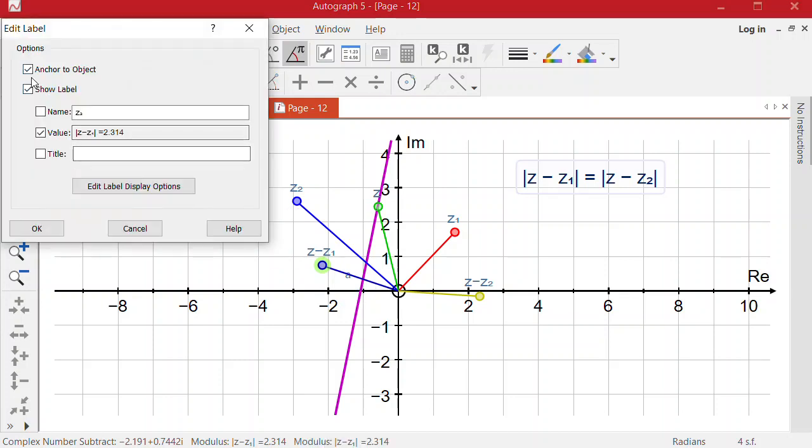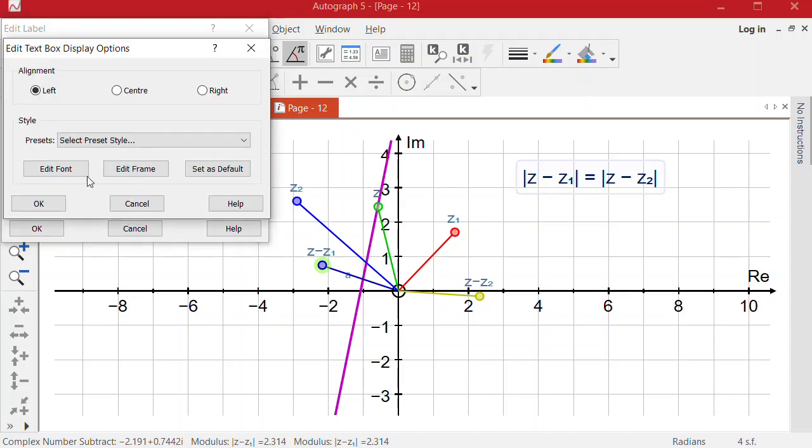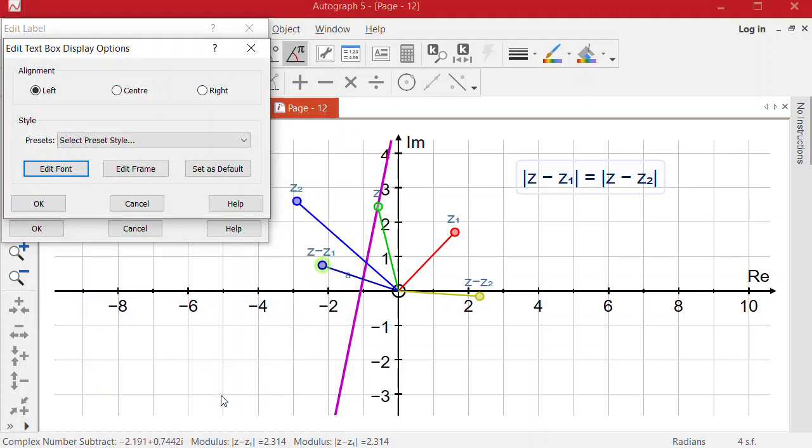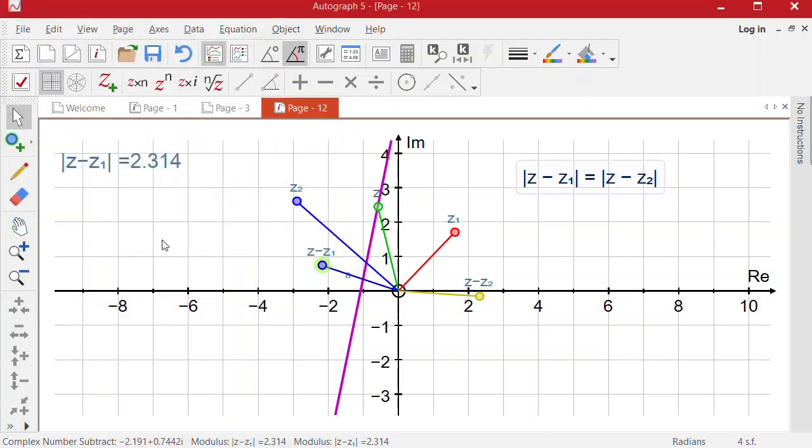I'll move that there and deselect anchor to object. I'm going to edit the label, edit the font, make it a bit bigger, go to 20 and then OK.